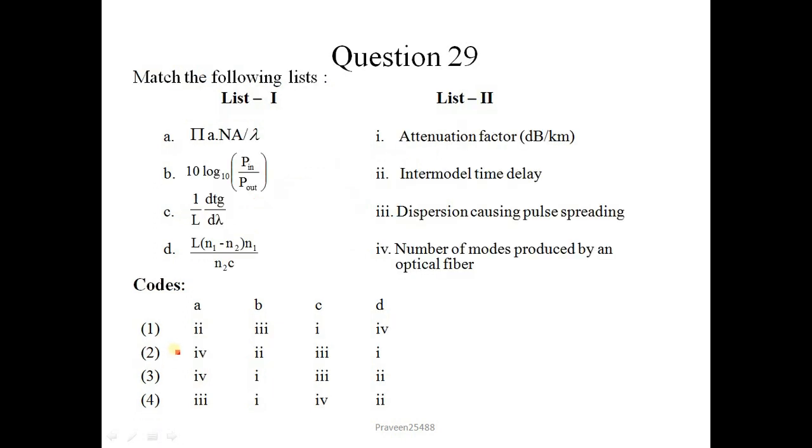Next question is question number 29. Match the following lists. So here, first expression is for number of modes. This is the expression for attenuation factor alpha. This is for intermodal dispersion. And this is for intermodal time delay. So correct option is 3, 4, 1, 3, 2.